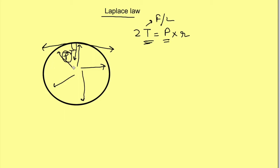If that balance doesn't happen, the pressure acting on the wall will rupture it. So in physiological conditions this tension is counterbalanced by the pressure. In certain conditions we look at the equation as: how much pressure of the contents is causing how much tension on the wall.